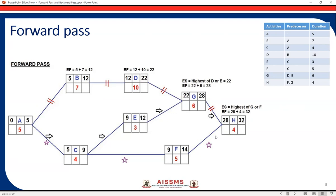We have now calculated for all activities except the last one, activity H. H is dependent on two activities: activity G and activity F. Activity F finishes at earliest by day 14 and activity G finishes at earliest by day 28. We take the highest, which is 28. Activity G's EF acts as ES for activity H. Early start for H is 28, plus duration four equals 32. So the early finish for activity H is 32 — activity H can be finished at earliest by day 32.